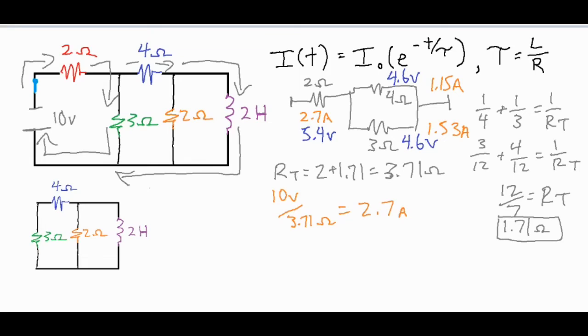Tracing back to our original drawing, current goes to the 2 ohm then either through the 3 or the 4. The path to the 4 goes through our inductor, so we focus on this branch with the 4 ohm resistor. This gives us the current which is our initial current I₀ = 1.15 amps.